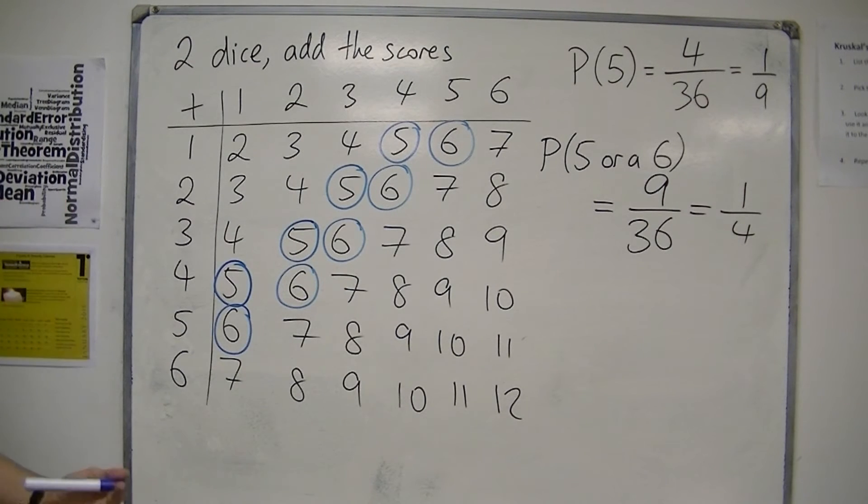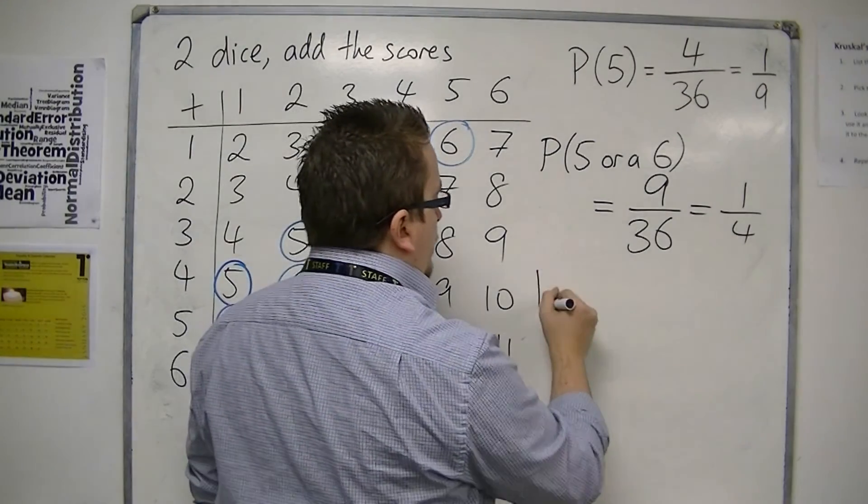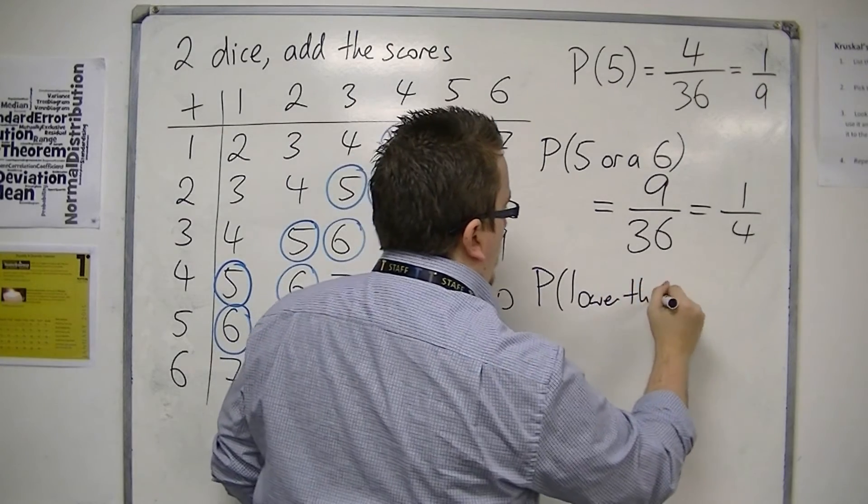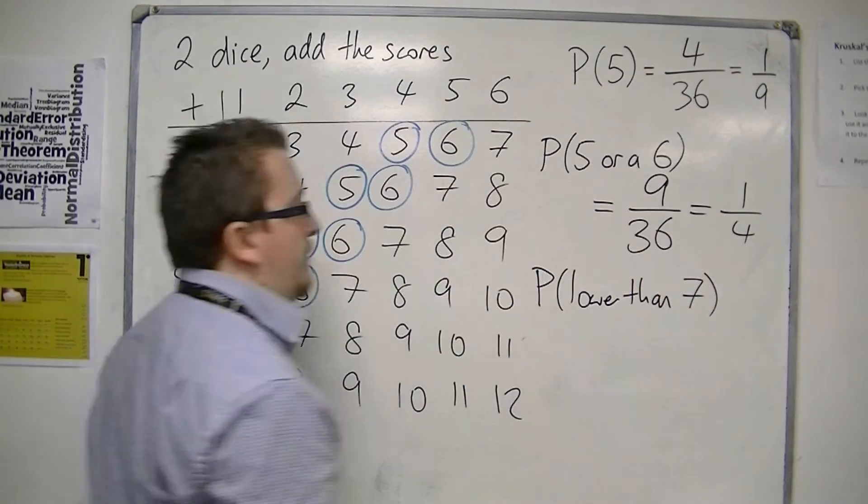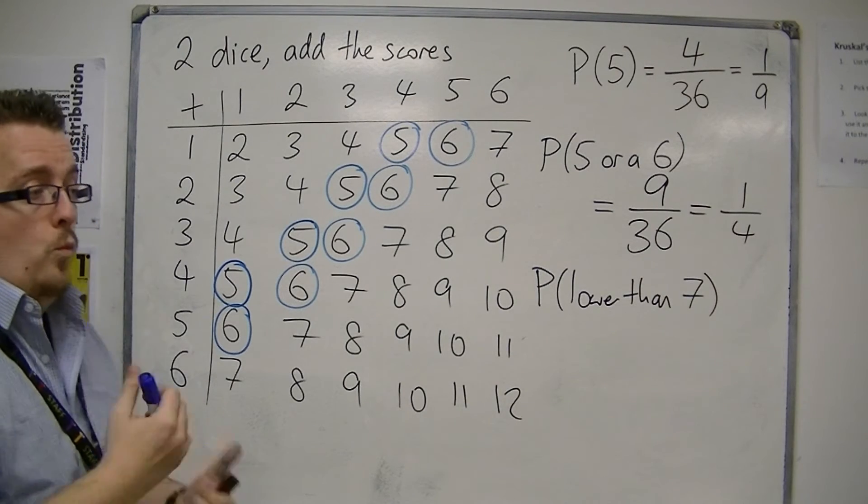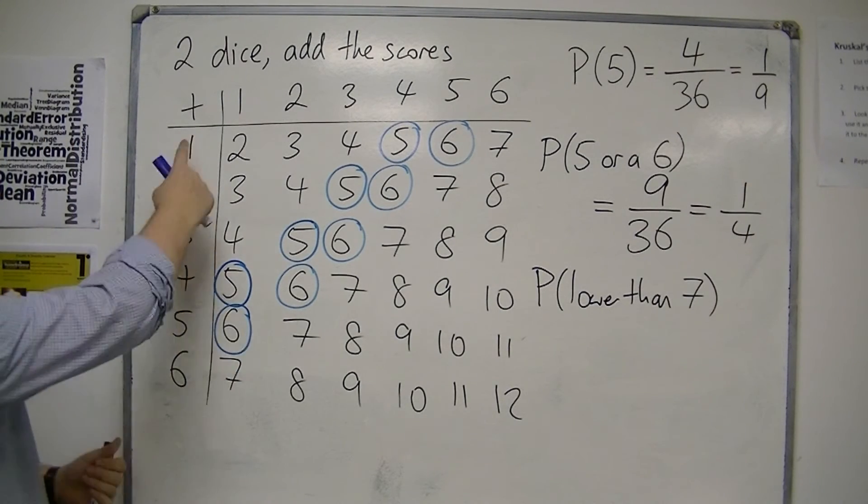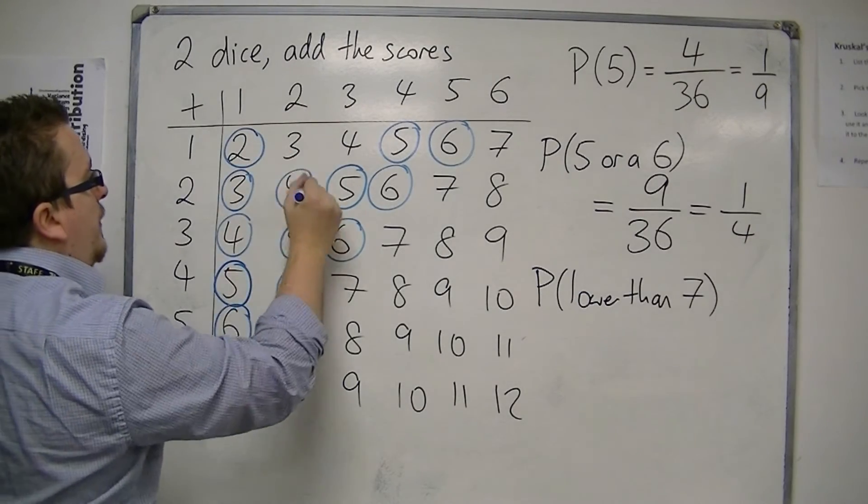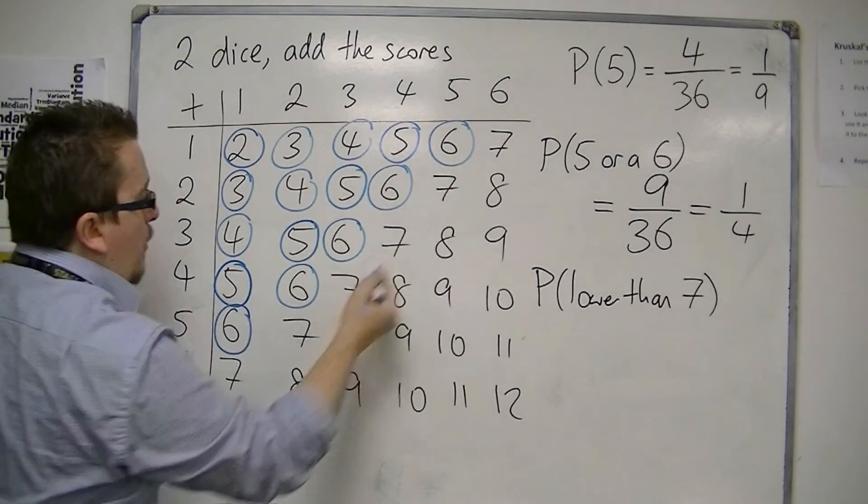You could also be asked something like, what is the probability of scoring lower than seven? Well, lower than seven: one, two, three, four, five, six. There's no ones there, but it will incorporate all of these numbers that are strictly lower than seven.